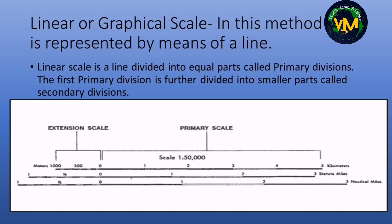Number 2 is graphical scale, also called linear scale. It is represented by means of a line — a linear scale is a line divided into equal parts called primary divisions. The first primary division is further divided into smaller parts called secondary divisions. This scale is very useful for calculating the distance between two places.